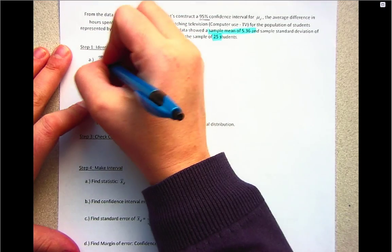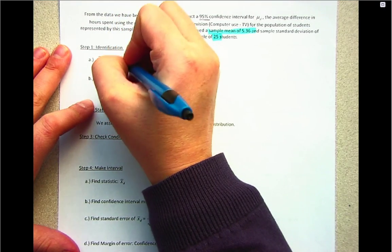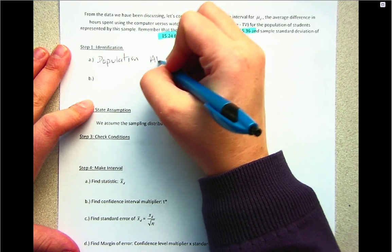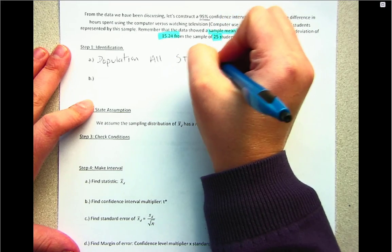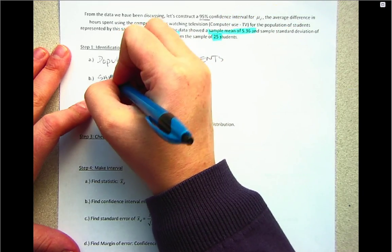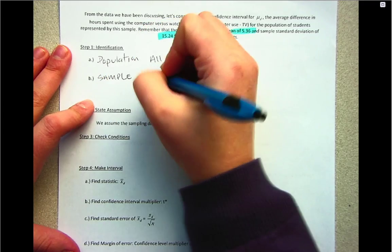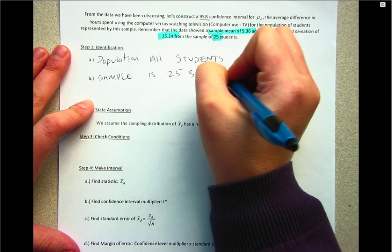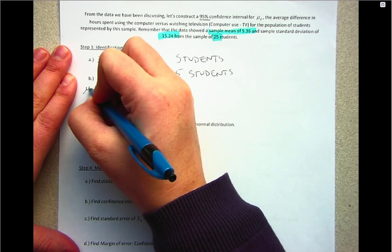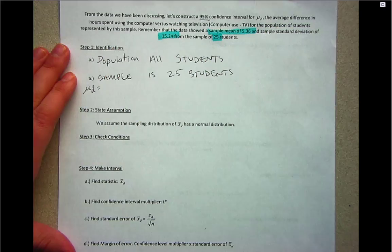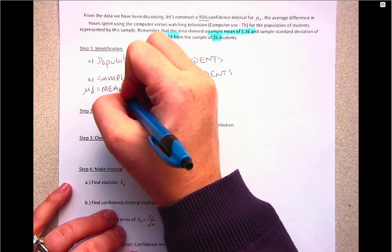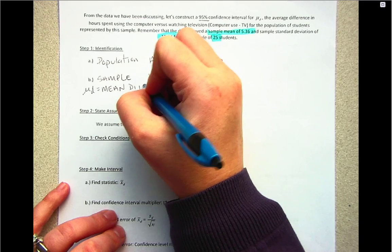Starting with step one, we'll identify our population. Here our population is all students. Our sample is 25 students. Remember, it's always beneficial to identify your parameter. We have μ_d, and because it's μ it's the mean; the subscript d indicates that it's a